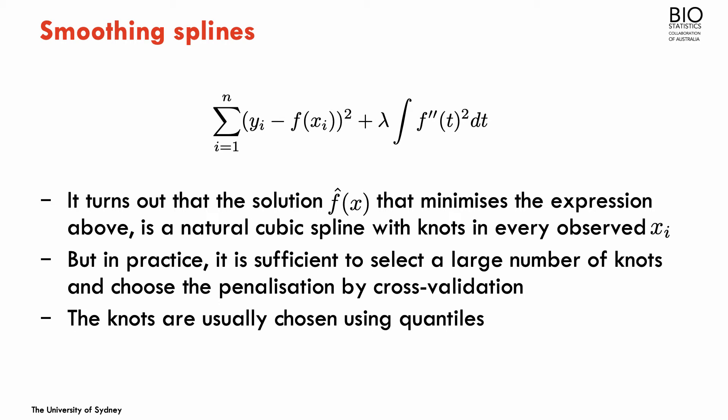In practical terms, we don't need to select the same number of knots as different values of x. It's enough to select a large number of knots. There's algorithms to choose what is large enough for the problems. If we have enough observations, this value can usually be above 50, but that also depends on the function that you're using. And the placement of the knots by default are chosen using the quantiles of the function.